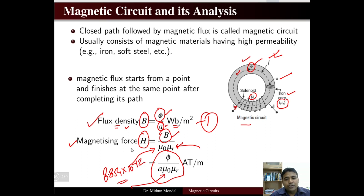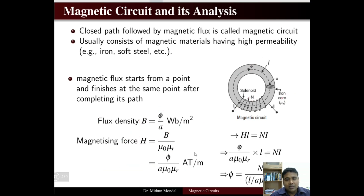We know that H·L — that is, the magnetizing force multiplied by the length of the magnetic circuit — is equal to the number of turns times the current I. This product N·I is the MMF, that is the magnetomotive force.